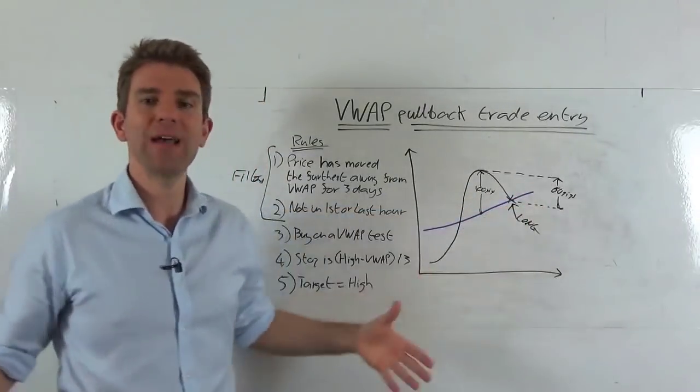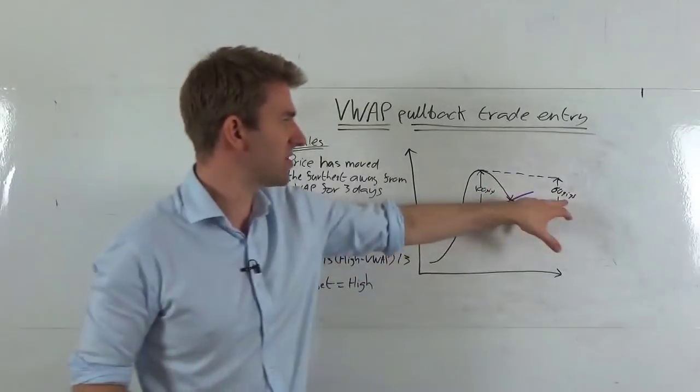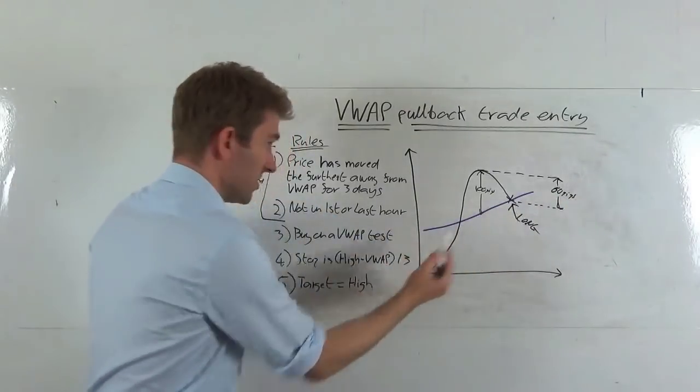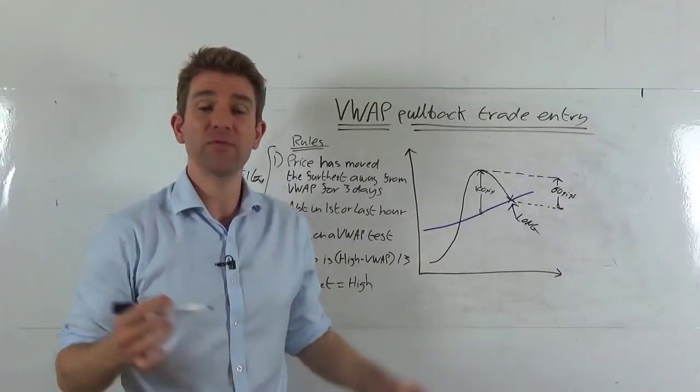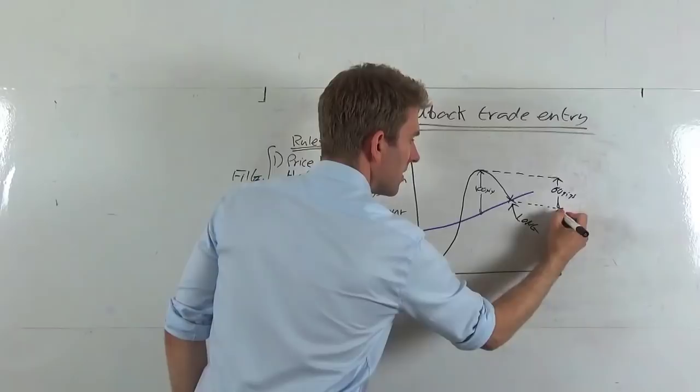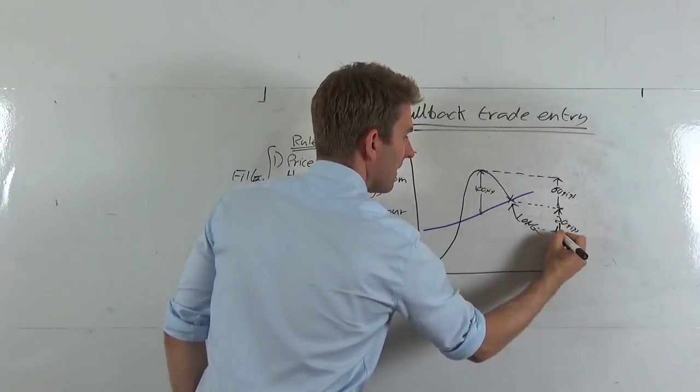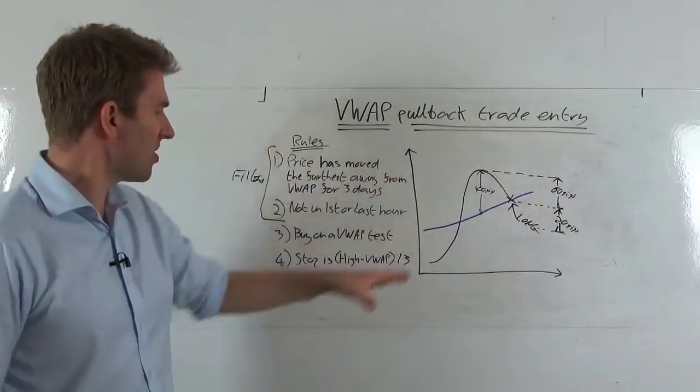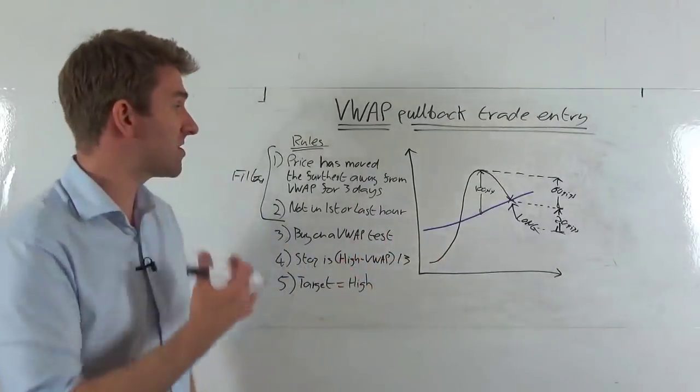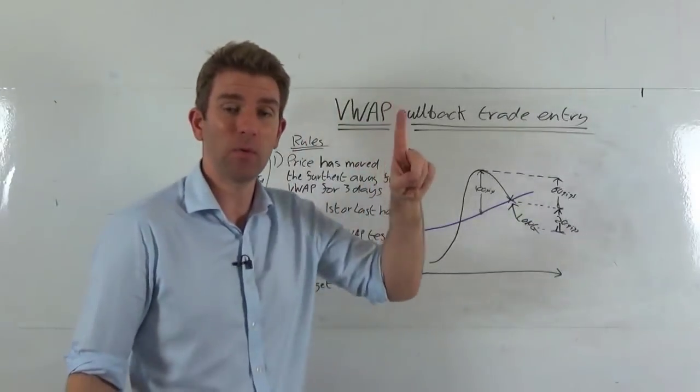So we're buying on the VWAP test. Where's our stop? Our stop is going to be high minus the VWAP, which is going to give us our 60 pips. So wherever that high point was there, we minus it from the VWAP point here, gives us this level which 60 pips is going to be this bit here. And then we divide it by three, and obviously 60 divided by three is 20. So our stop is going to be 20 pips. So we're going to put down here 20 pips. And our target, that's obviously not to scale but you get the idea, our target is going to be the high, which is going to be 60 pips.